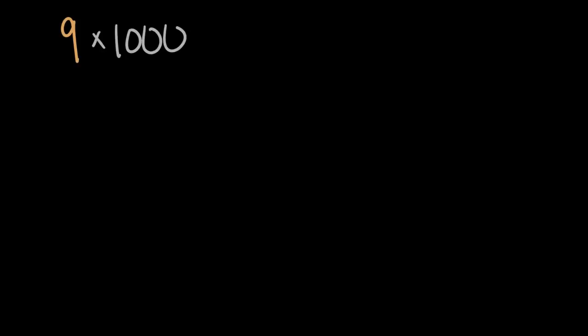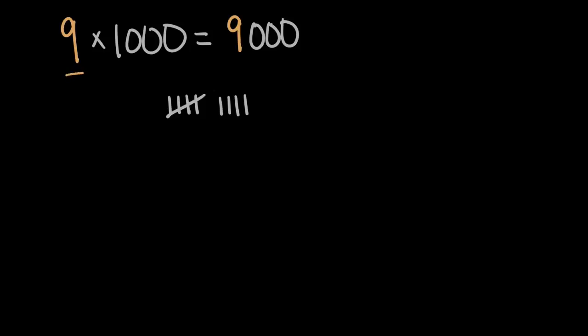We can go even further and think about thousands. Let's try nine times 1,000. We can think of this as nine thousands: 1,000, 2,000, 3,000, 4,000, 5,000, 6,000, 7,000, 8,000, 9,000. When I counted 1,000 nine times, our solution was 9,000. Looking at the numbers, that's a nine — our original whole number — with three zeros after it. So nine times 1,000 is 9,000, or nine with three zeros.